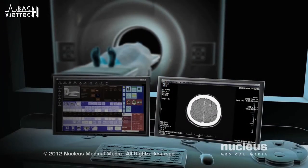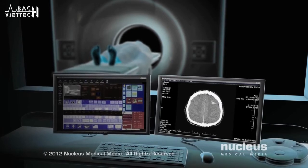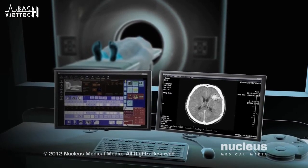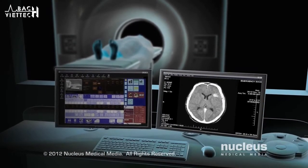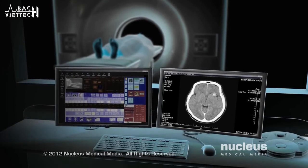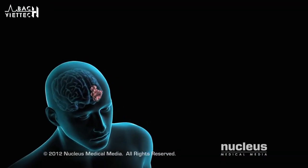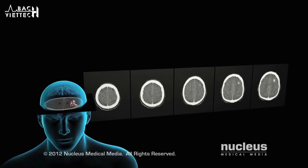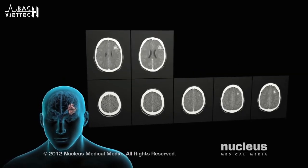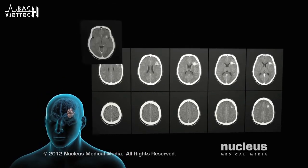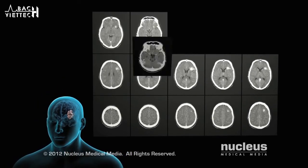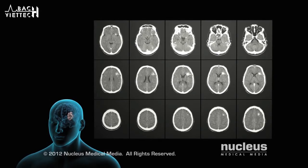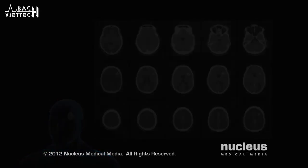The detectors will send data to a computer that will create cross-sectional images of the bones and soft tissues inside your body. The scan allows your doctor to see the location of a condition inside your body, which will help them decide how to treat it or to see how well your treatment is progressing.